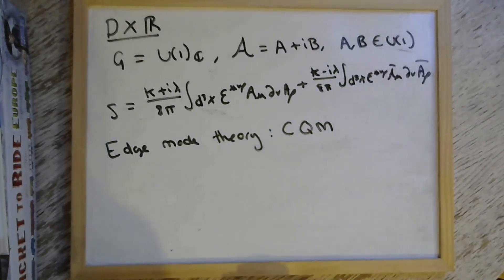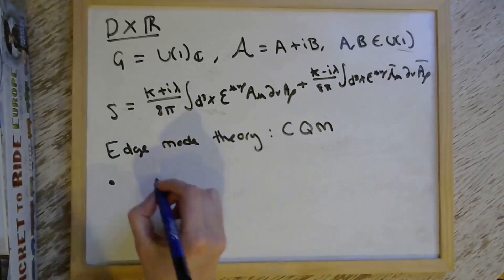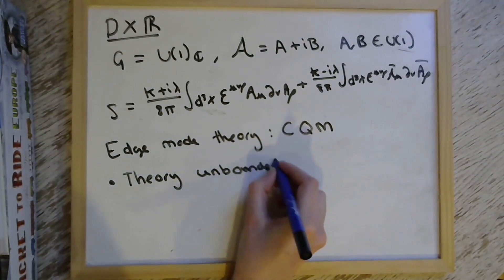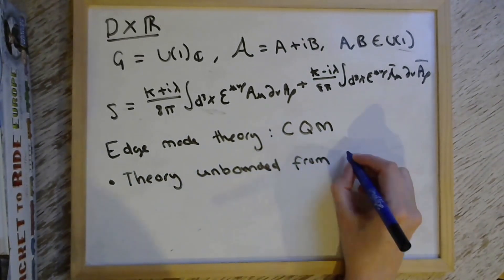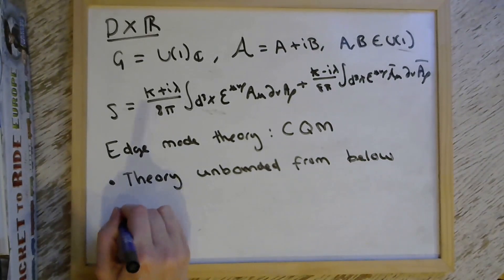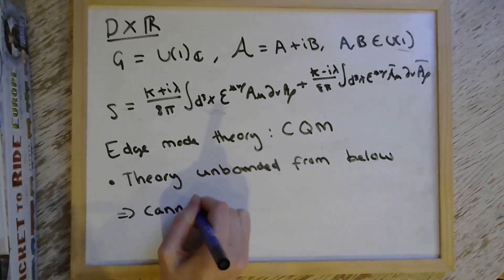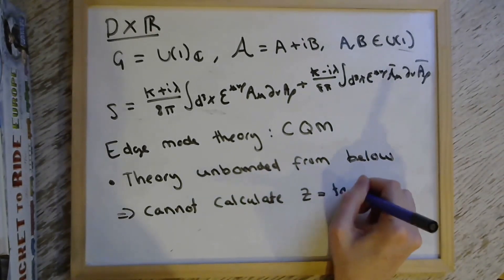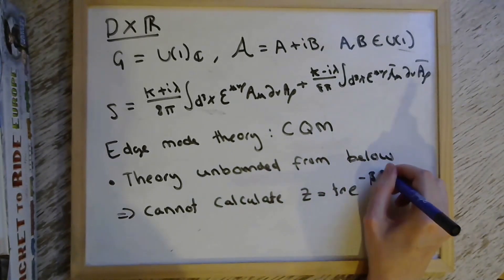But we have a problem, which is that we find that the Hamiltonian of this theory is unbounded from below, which means that we can't calculate the partition function in the same way as we did for the very simple U(1) case that we did first of all. Because in that case, we used Tr(e^{-βH}) to calculate the partition function.